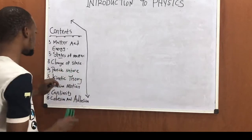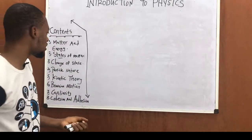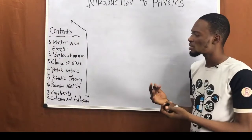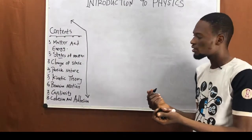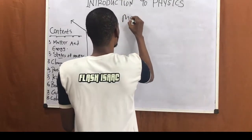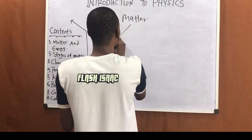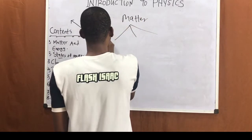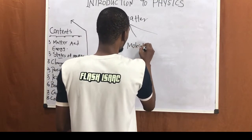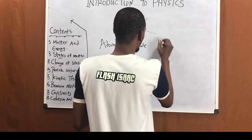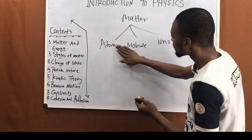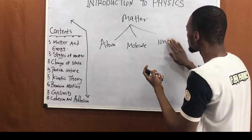As I explain particle nature of matter, these things will begin to make sense. Scientists believe that matter is made up of particles, and these particles are atoms, molecules, and ions.